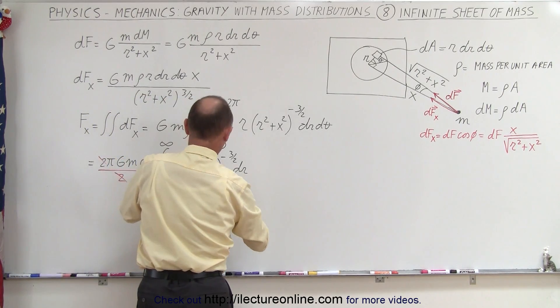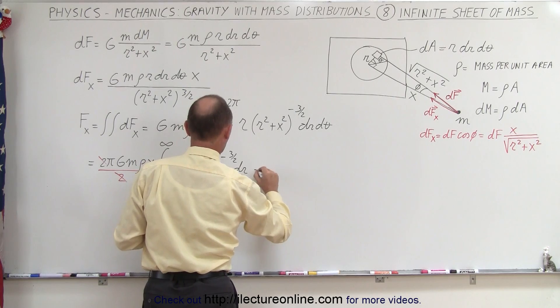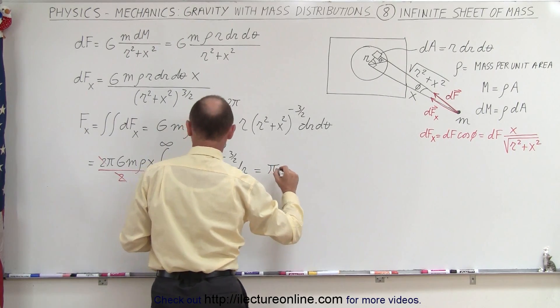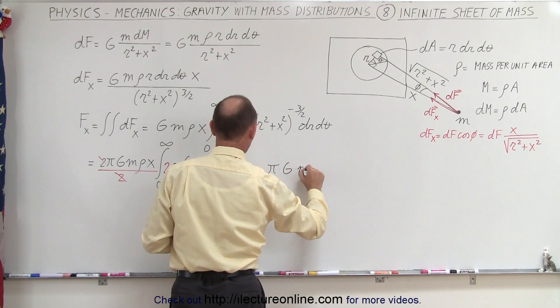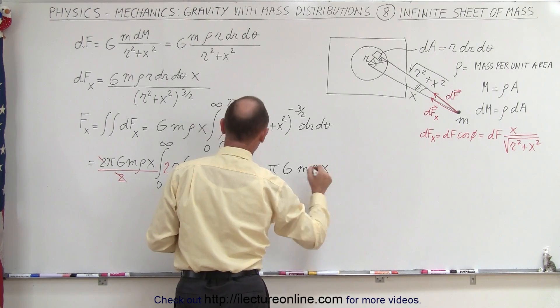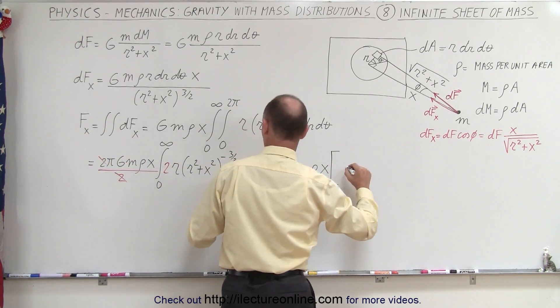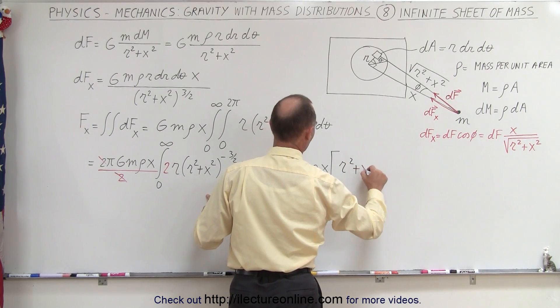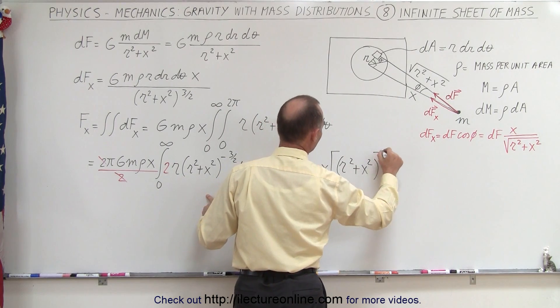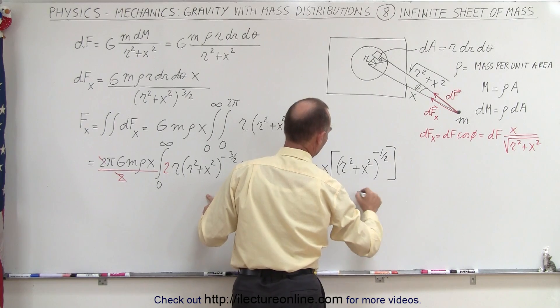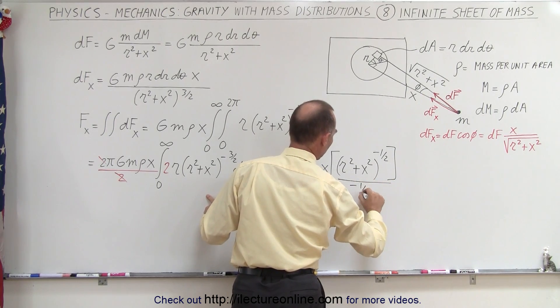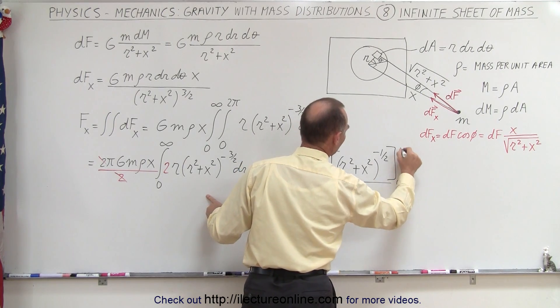So this now becomes pi times g small m density x. And so now when we integrate this, we end up with r squared plus x squared to the minus 1 half power divided by the new exponent minus 1 half and integrate it from 0 to infinity.